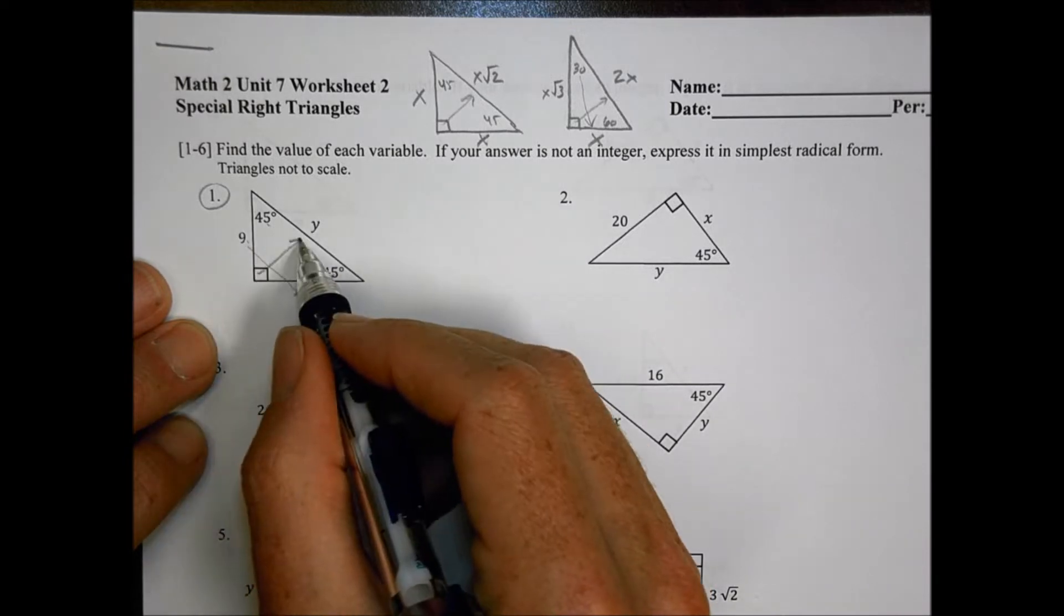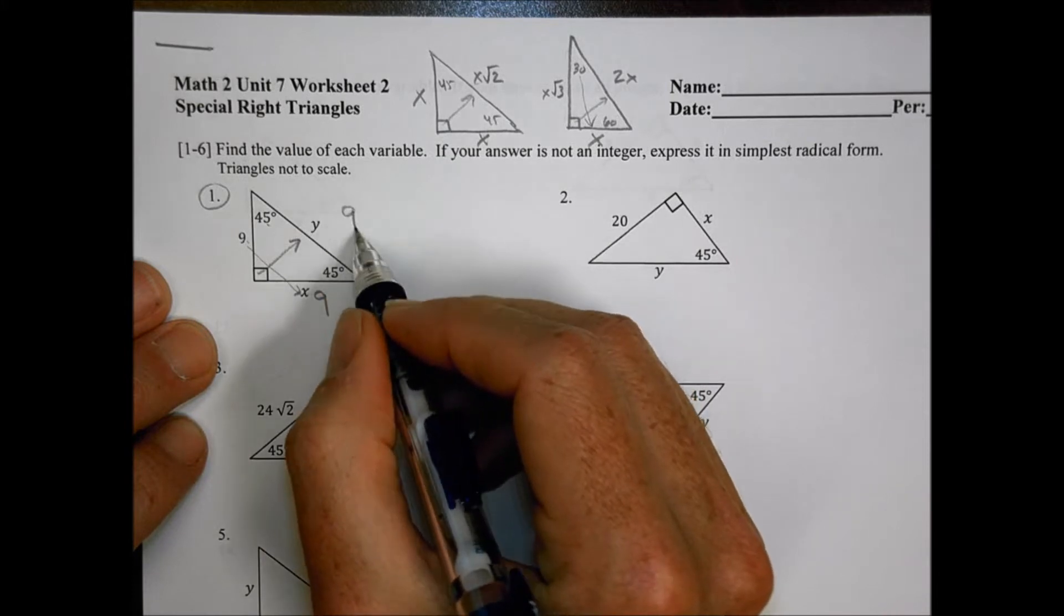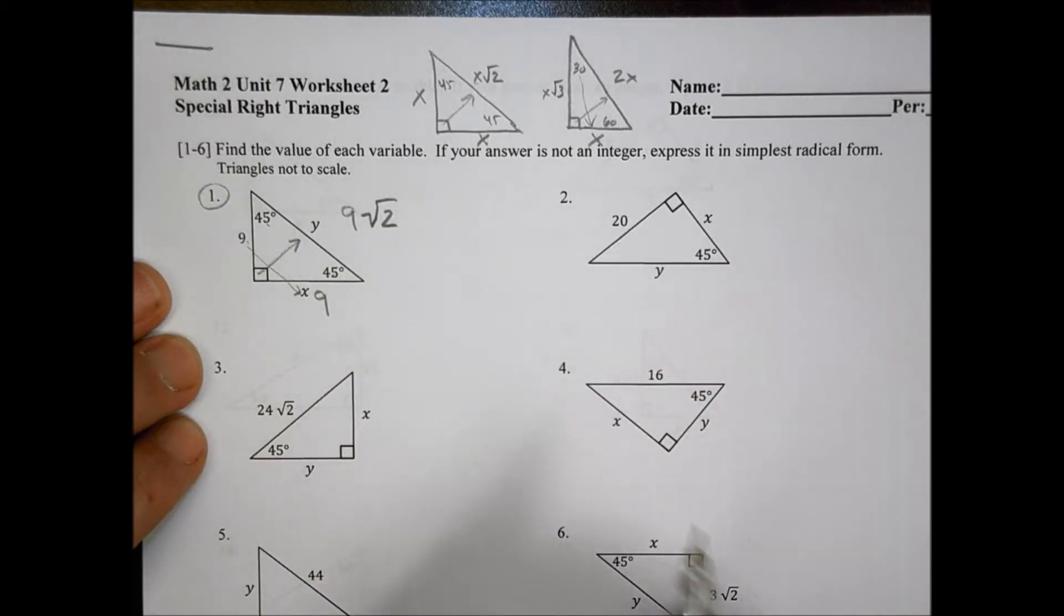And across over here, across the hypotenuse, we're going to say it's X root 2, where our X value is 9, and we just put a root 2 next to it, and that becomes our Y value.